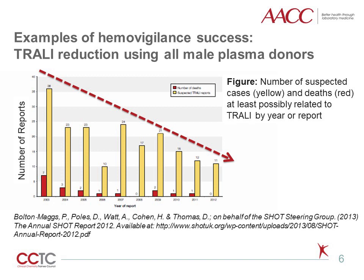Moreover, female donors are more often implicated in TRALI cases. Because of these observations, blood services in the United Kingdom introduced risk-reducing strategies, such as the move to all-male donors for fresh frozen plasma in 2003, and the preferential recruitment of male apheresis platelet donors. Newly recruited female platelet donors were also screened for antibodies to human leukocyte antigens, or HLA, and human neutrophil antigens, or HNA, and retested after pregnancies. With these strategies, reported TRALI cases decreased from a peak of 36 suspected cases and seven deaths in 2003 to 11 suspected cases and no deaths in 2012.